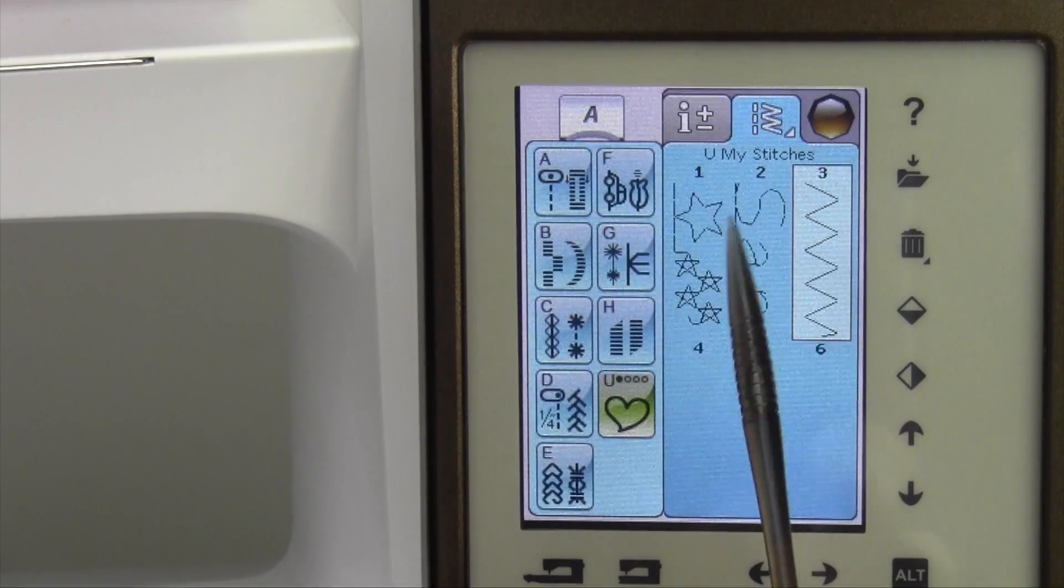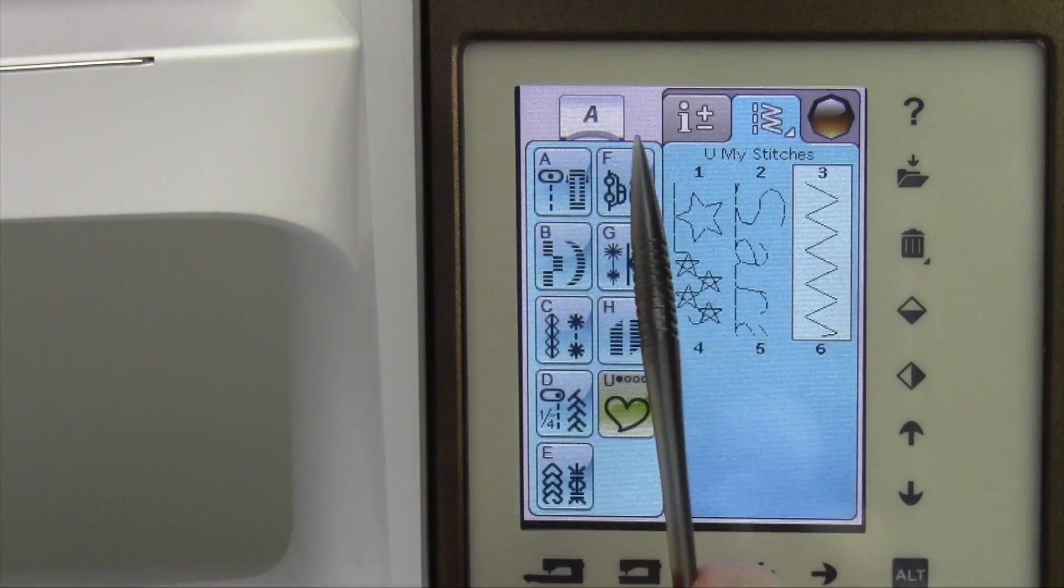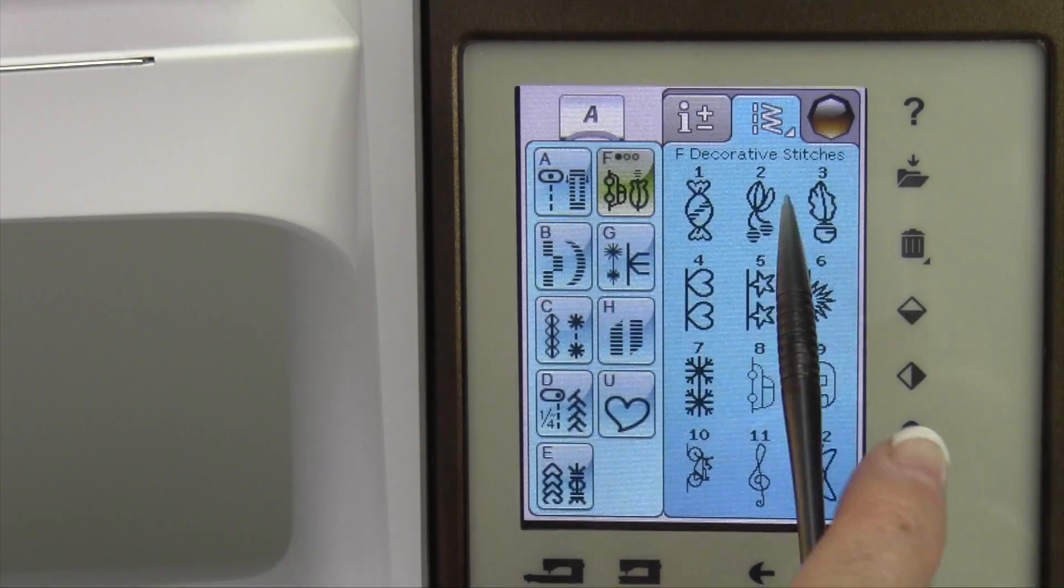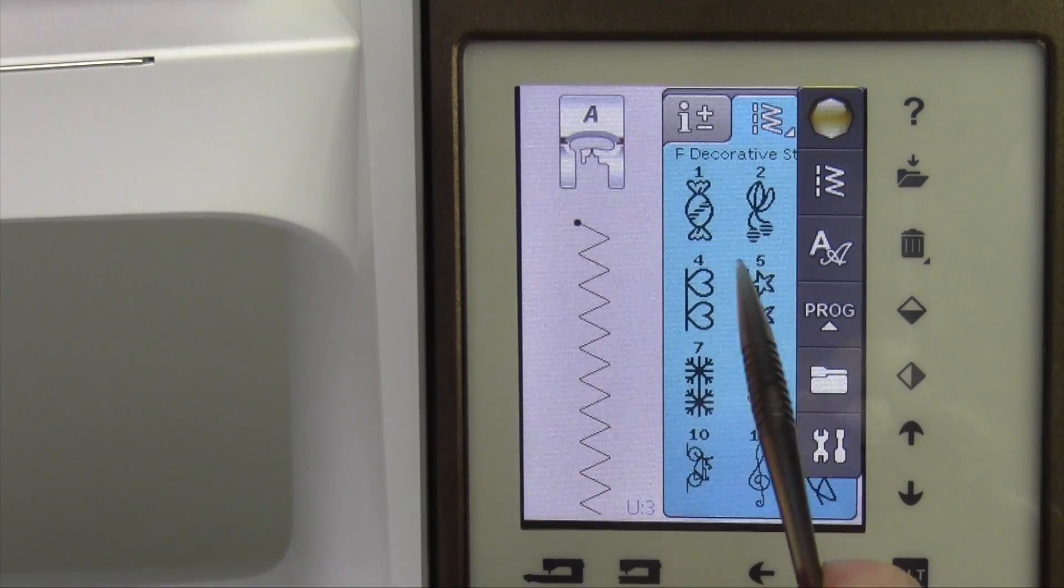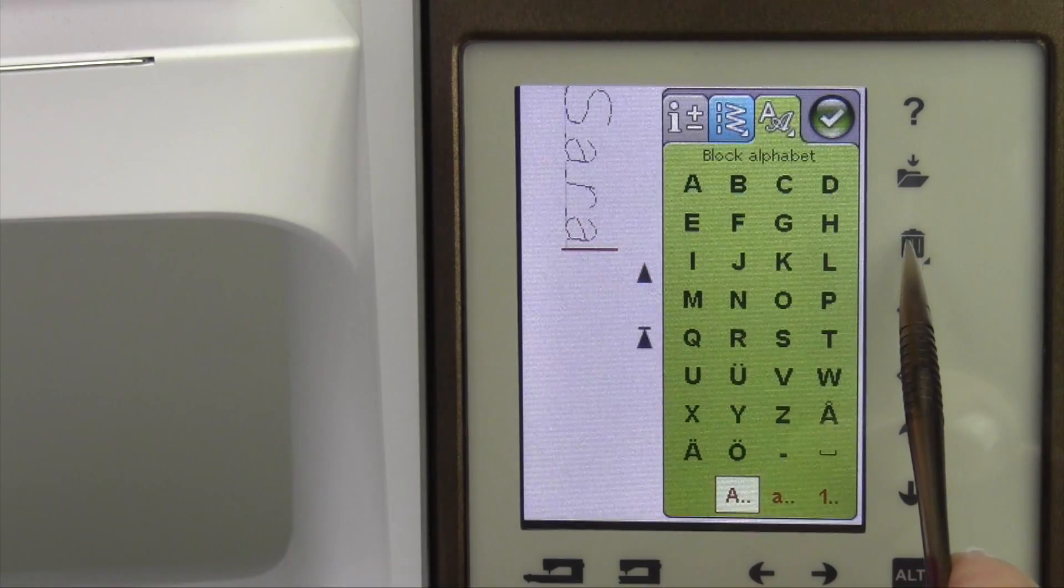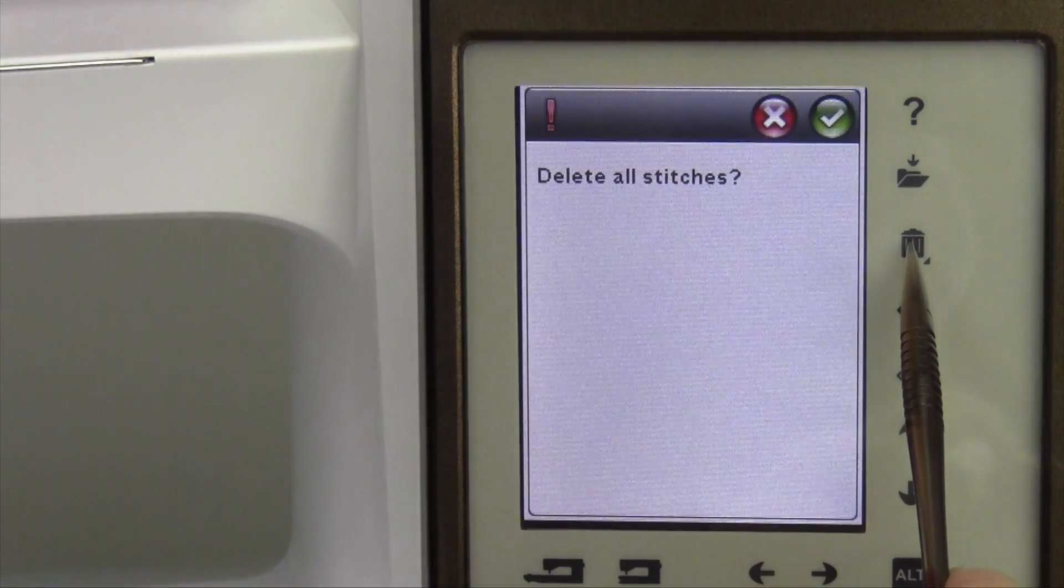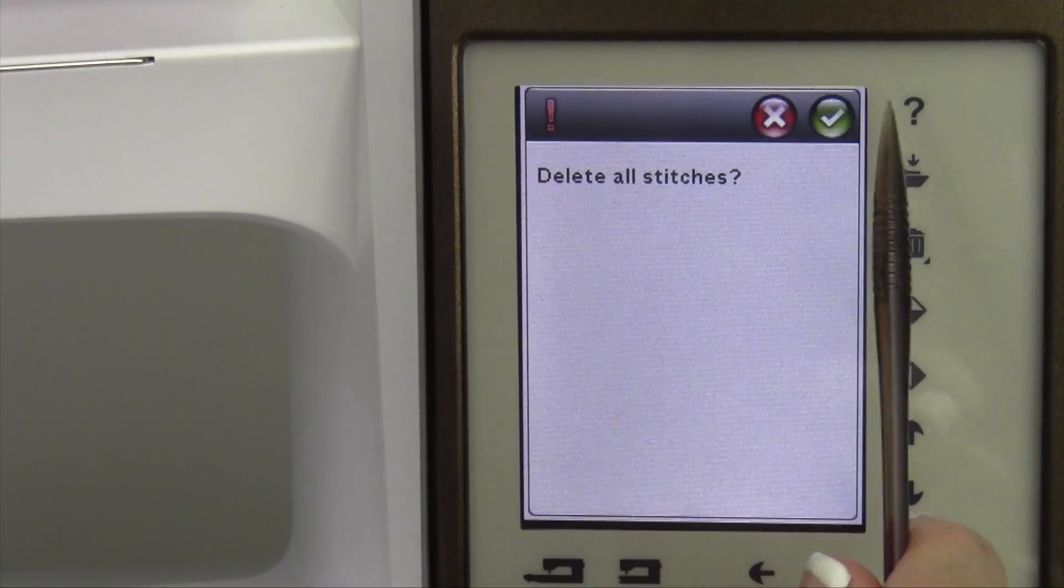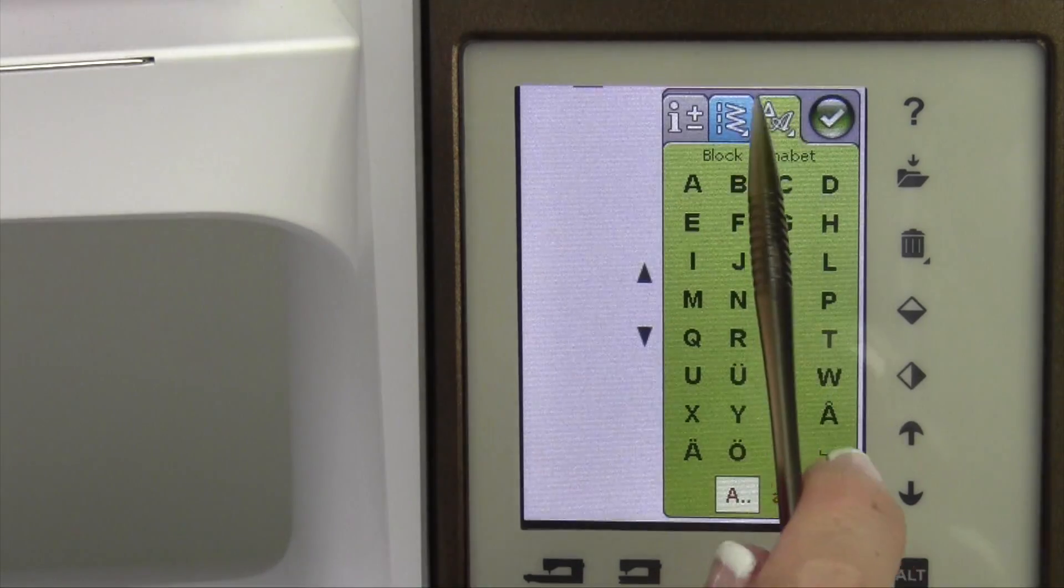Now you notice that I put in a few other ones here, and those were combinations. If we had a decorative stitch, we could go to program, and whatever's here, we can delete by touching the trash can and holding down on it until the message comes up, delete all stitches, green check mark.